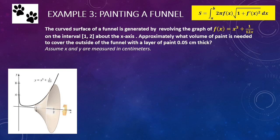Our next problem is Example 3: painting a funnel. This problem is more straightforward, though there is one little twist and some simplification challenges. The curved surface of a funnel is generated by revolving the graph of f of x equals x cubed plus 1 over 12x on the interval from 1 to 2 about the x-axis. Approximately what volume of paint is needed to cover the outside of the funnel with a layer of paint 0.05 centimeters thick? Assume x and y are measured in centimeters. Since we're looking to paint the outside of the funnel, we are looking for the surface area, and we have a direct formula for that. We have the function, so all we need is the derivative — plug it in and solve.